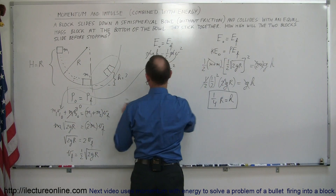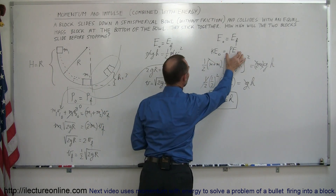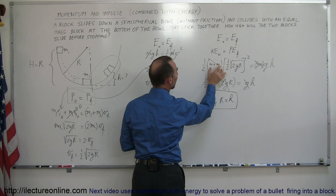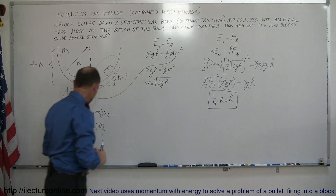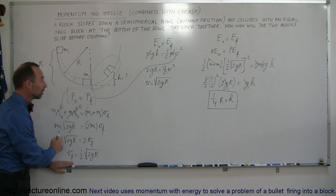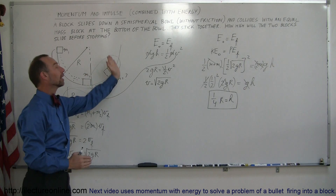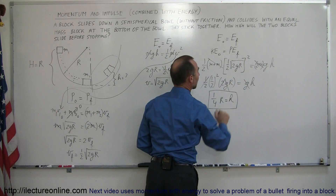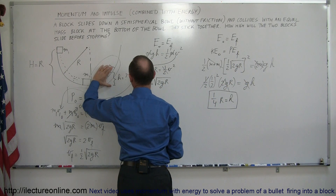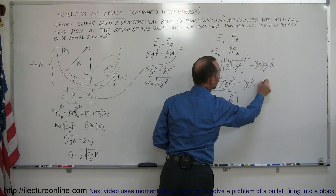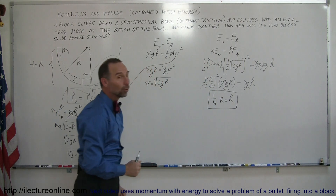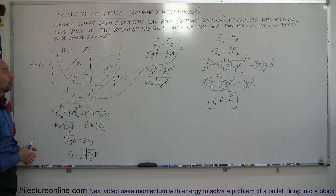We use conservation of energy again. The initial kinetic energy as the two blocks slide up the bowl equals the final potential energy at maximum height. Kinetic energy is one-half mv squared — the mass is the two blocks, and v is the velocity right after the collision, which becomes the initial velocity as they slide up. That equals mgh of potential energy when they stop. There are two blocks, so we have 2m, and simplifying gives h equals one-quarter r. Now we'll do a couple more of these to get you more of a feel for how to do these problems.